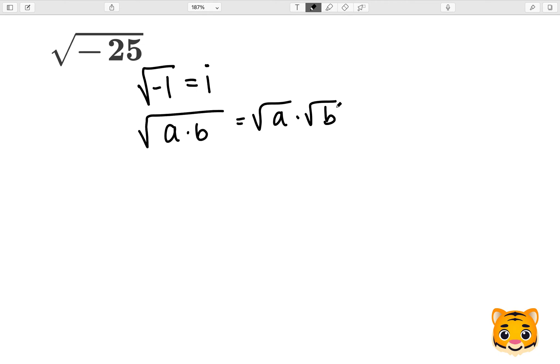This means that if we have the square root of two values, we can then rewrite it as the square root of one of the values times the square root of the other value.